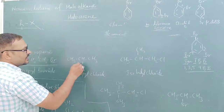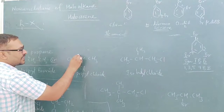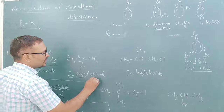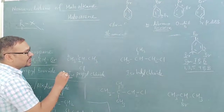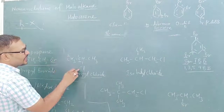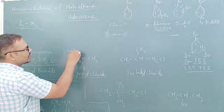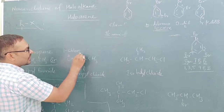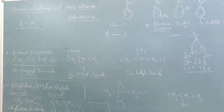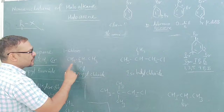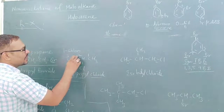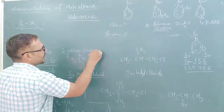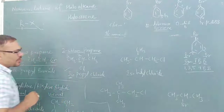Similarly, here you can see there is a branch carbon. Numbering gives position 2 for the halogen. Commonly we call it isopropyl chloride. But when writing the IUPAC name, the halogen is at position 2, so we write 2-chloro. How many total carbons? Three carbons — so propane. The IUPAC name is 2-chloropropane. The common name is isopropyl chloride.